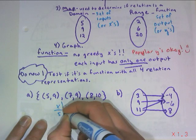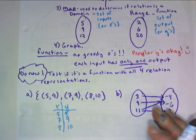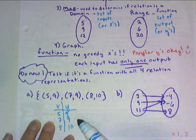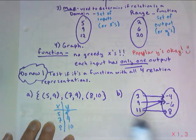So you have 5 to 9, 7 to 9, 8 to 10. So we look and we see that there is a popular y, but x, when I put in 5 I get a unique value, when I put in 7 I get a unique, and 8 I get a unique.